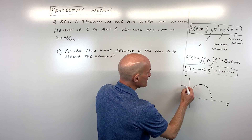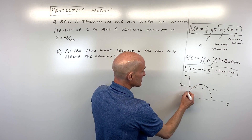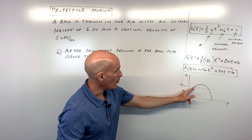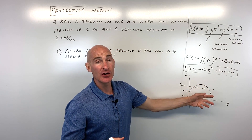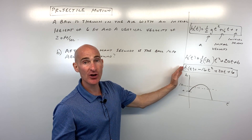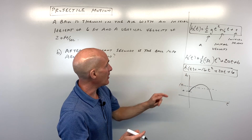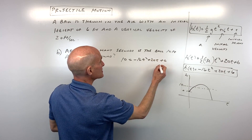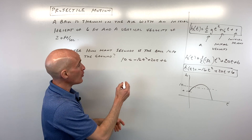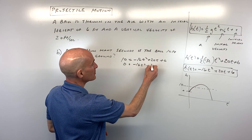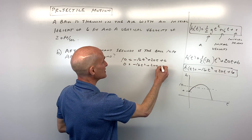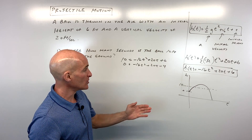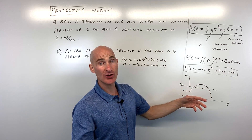We want to find out when the ball reaches ten feet above the ground. It could be at two points — on the way up and on the way back down. The height equals ten, so we write: 10 = -16t² + 20t + 6. Subtracting ten from both sides gives us zero equals -16t² + 20t - 4. We can solve this by completing the square, factoring, the quadratic formula, or graphing. Let's try factoring first.